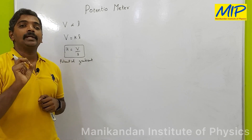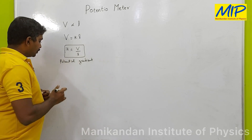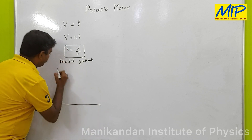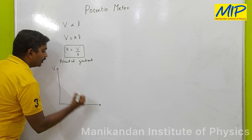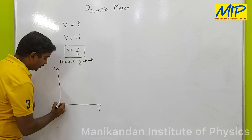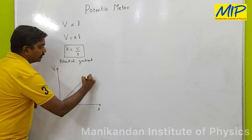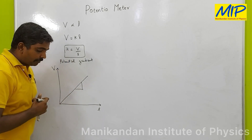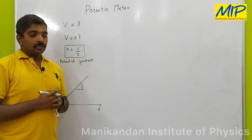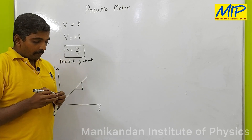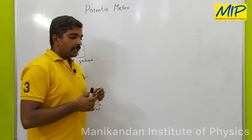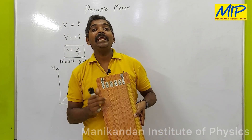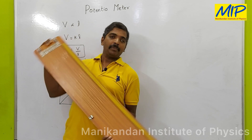This K is called the potential gradient. Potential gradient is nothing but the potential drop per unit length. If you plot a graph between potential drop versus the length of the wire, you get a linear curve, and if you take the slope of that curve, you can find the potential drop per unit length.